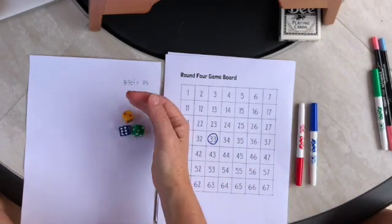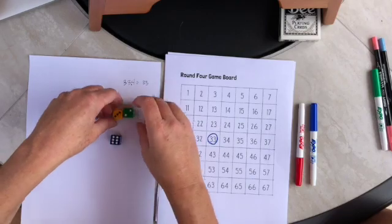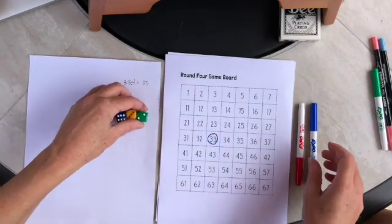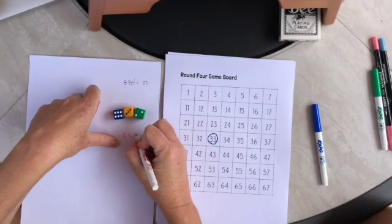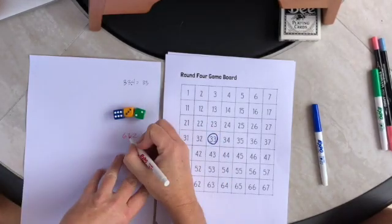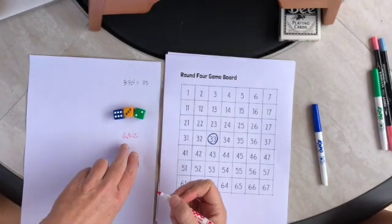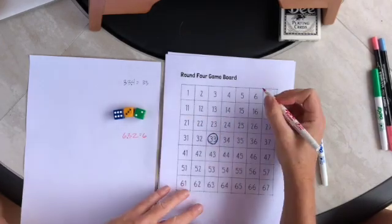So the next person to go, roll a 6, a 3, and a 2. Let's go ahead and do 6, 3, 2. Maybe we'll do 6.32, which will round to a 6.